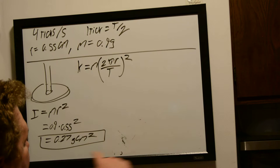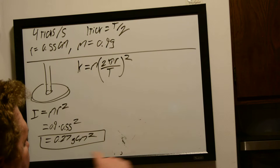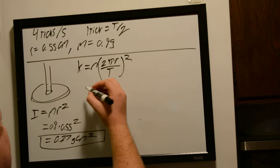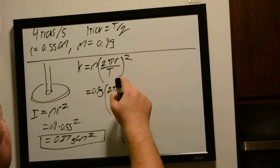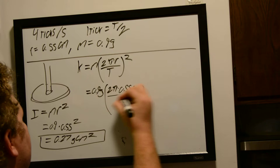Like, it doesn't really start to get interesting until we start converting it into the units that the torsion constant wants to be in. So, we have our mass is 0.9 grams times 2 pi times our radius, 0.55 centimeters, all over our period, which we know,